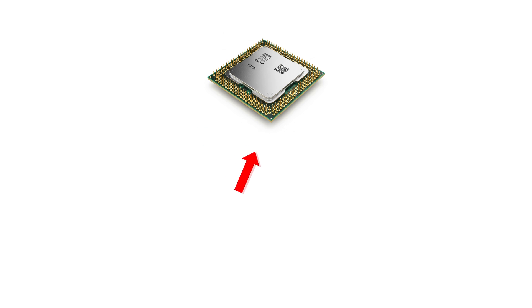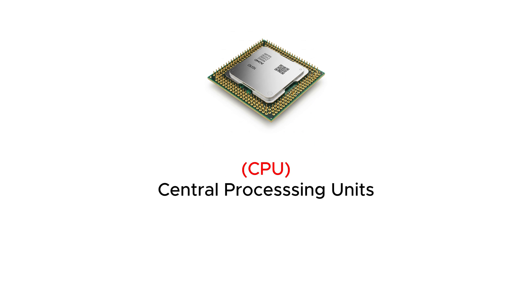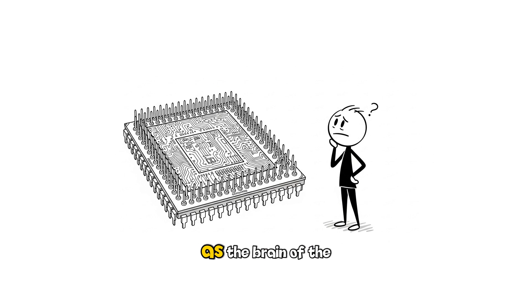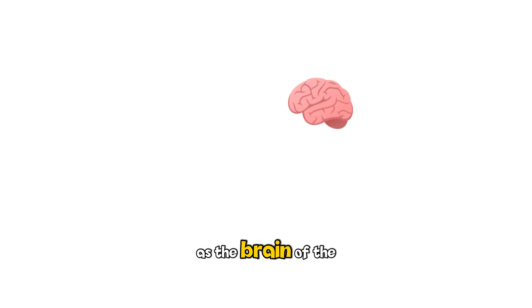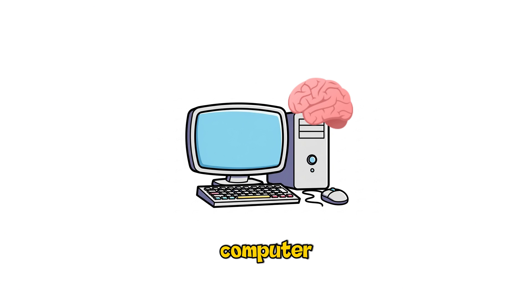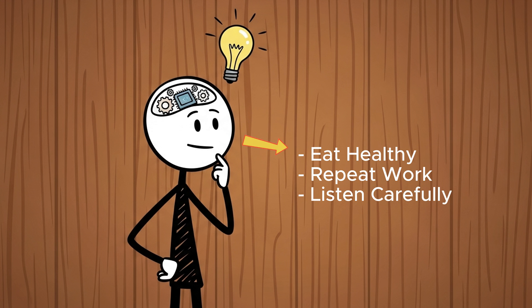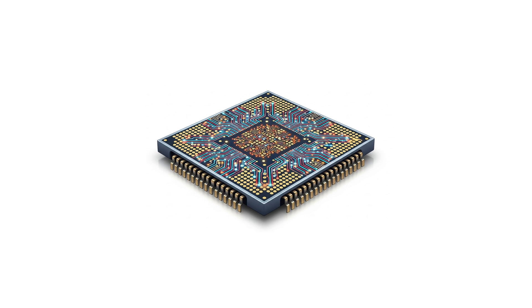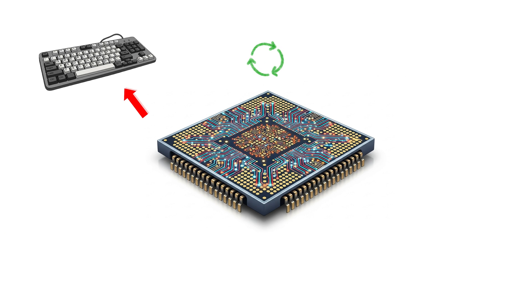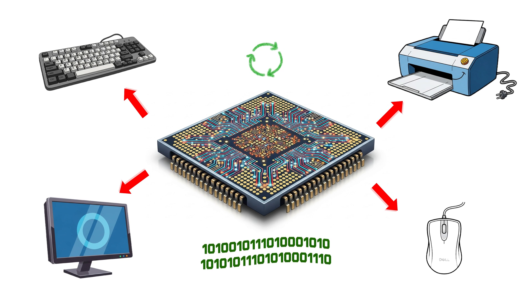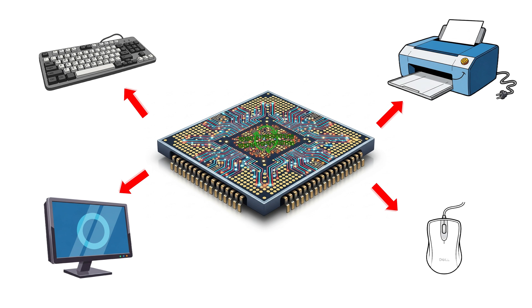CPU stands for Central Processing Unit. You can think of it as the brain of the computer. Just like your brain makes decisions and tells your body what to do, the CPU controls every single operation inside the computer.